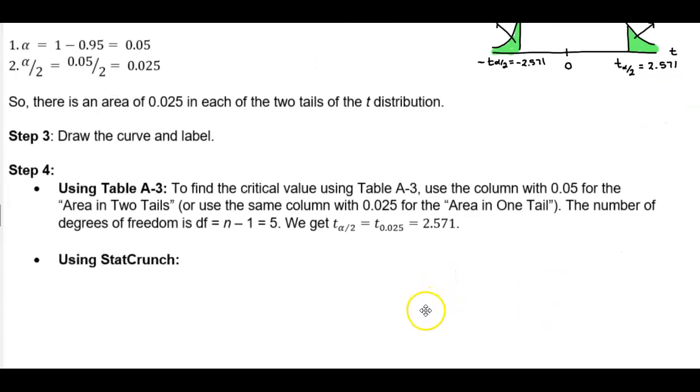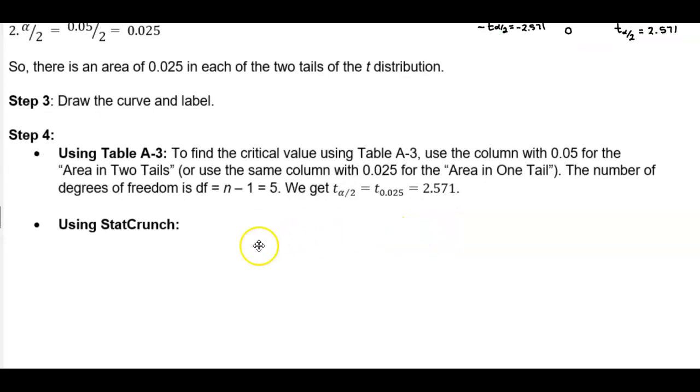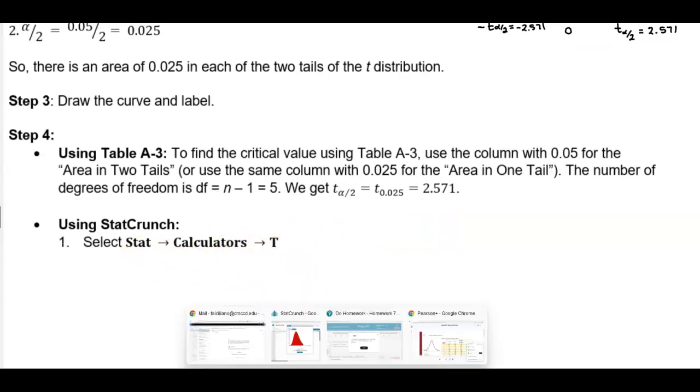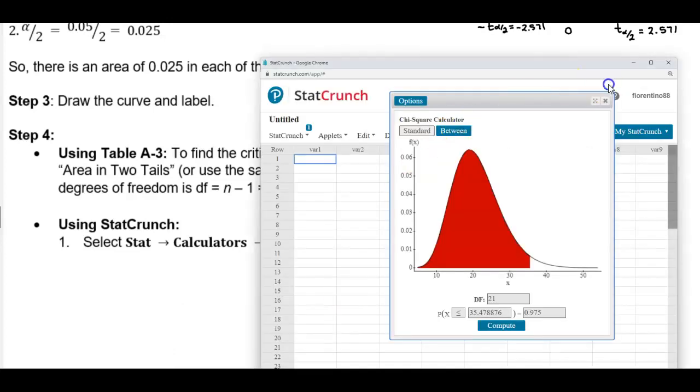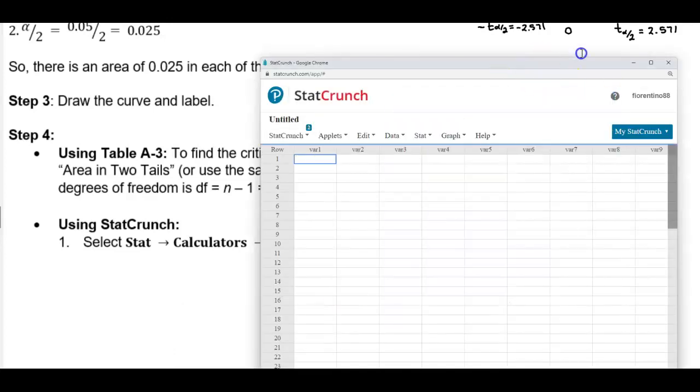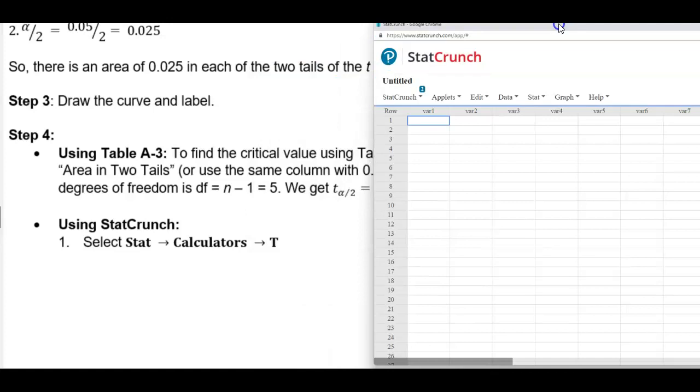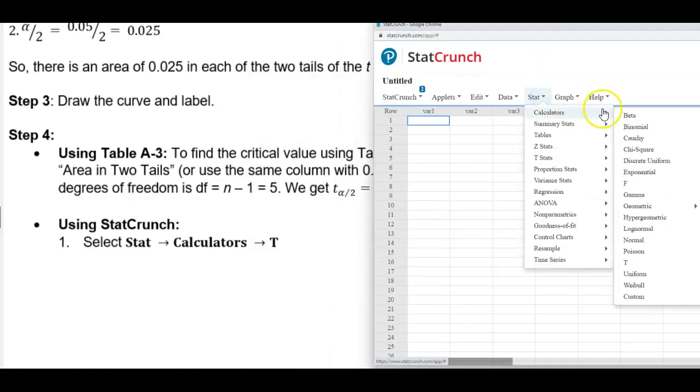Now if we want to use StatCrunch to find this critical value, then we need to first select Stat, Calculators, and then T. So we're going to select Stat, Calculators, and then look for the T distribution.